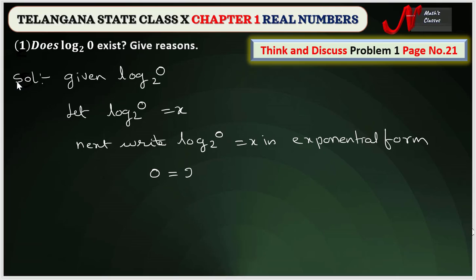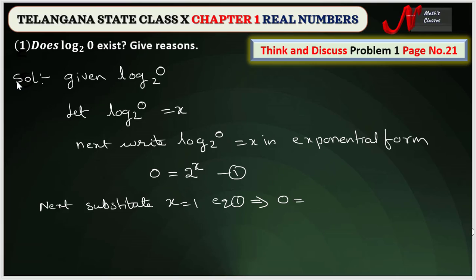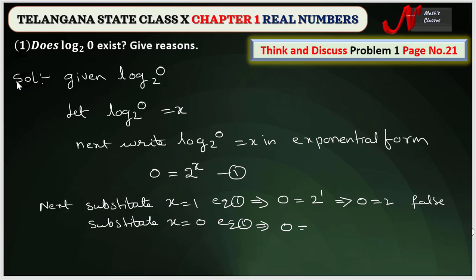We can write it as: zero is equal to two power x — call this equation one. Substituting x equal to one in equation one gives zero equal to two power one, which implies zero equals two. This is false. Next, substituting x equal to zero gives zero equal to two power zero, which equals one. This is also false, since zero is not equal to one.